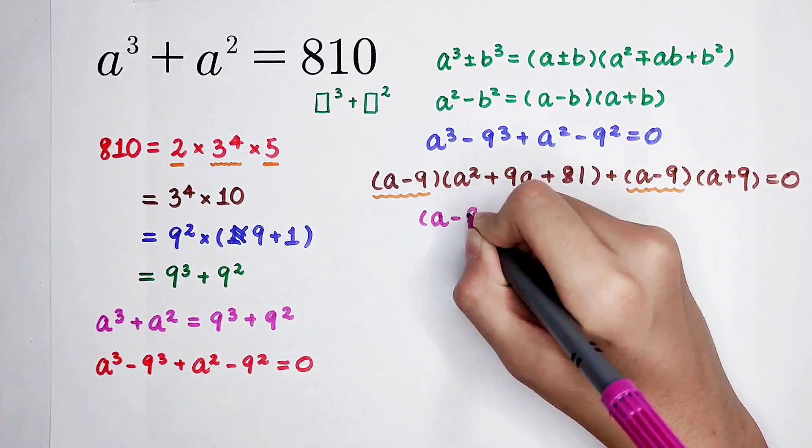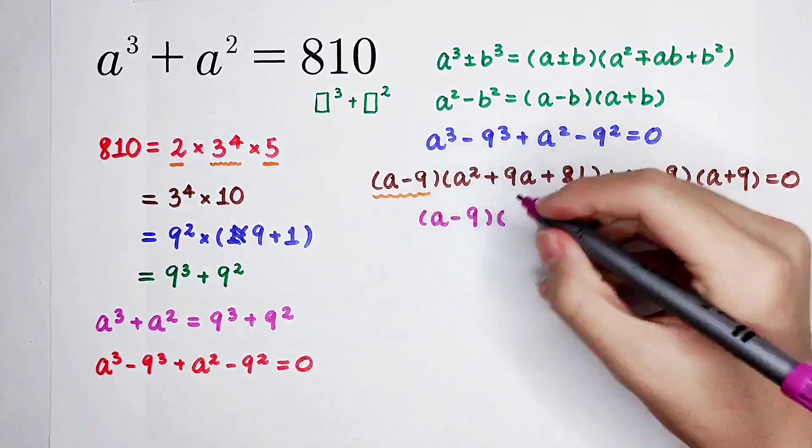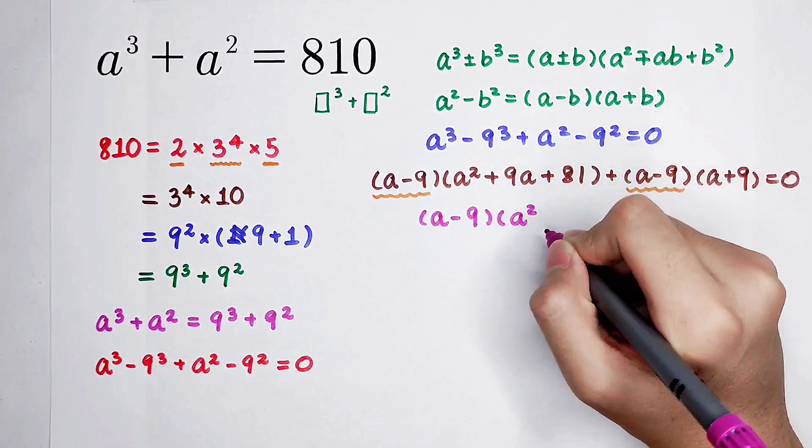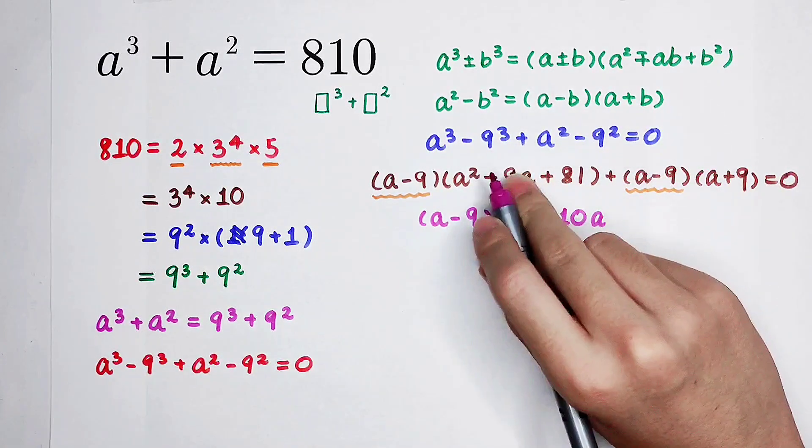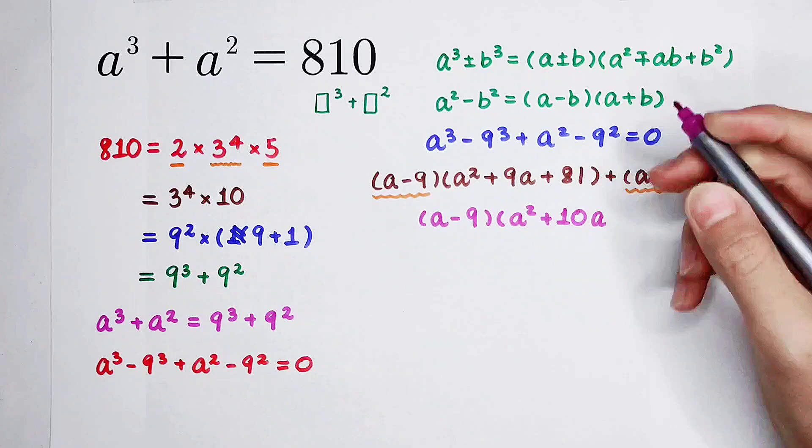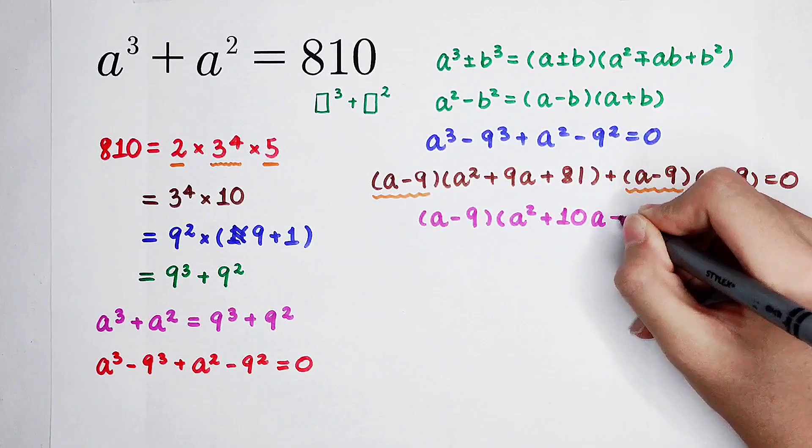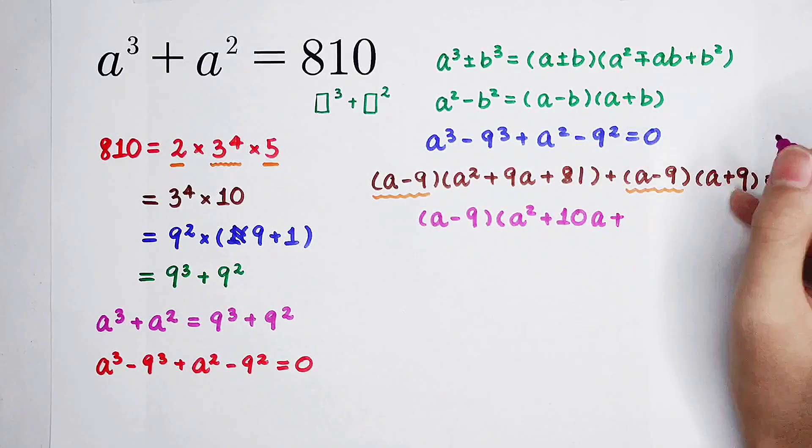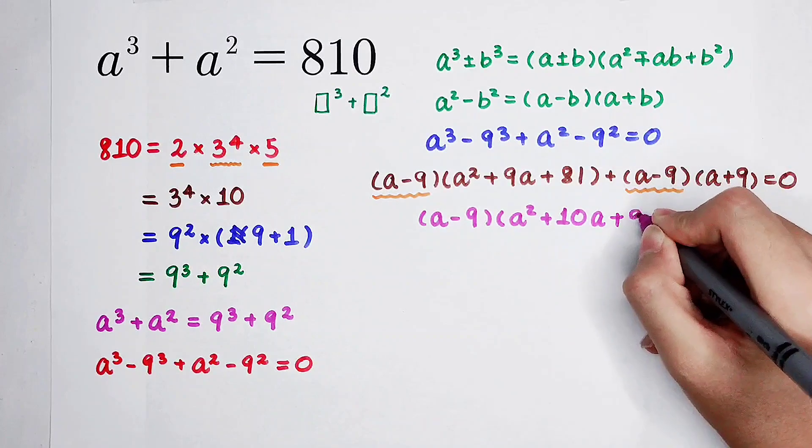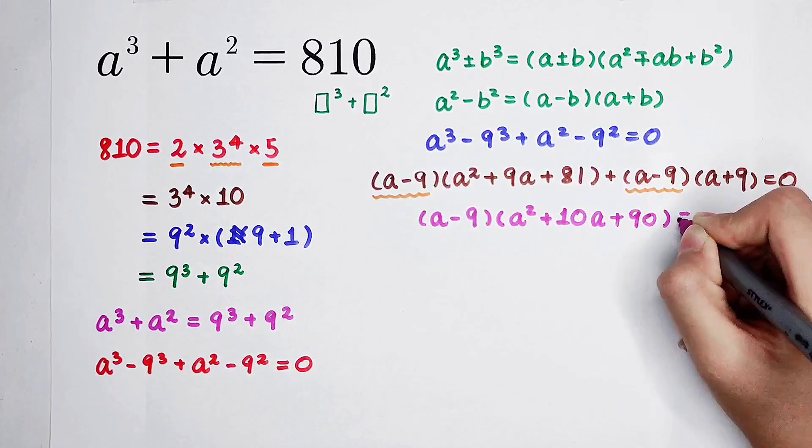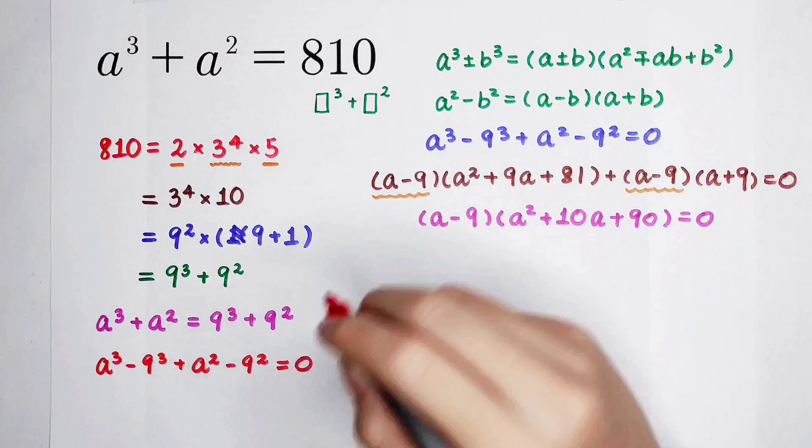And you can get a minus 9 times a squared, here is 9a, then plus a, that is 10a, and then plus 81, then plus 9, that is 90, equals 0. Now, there are two cases.